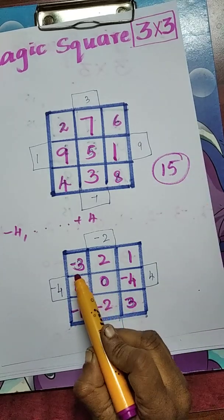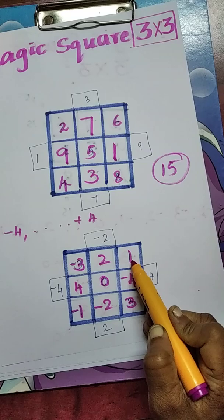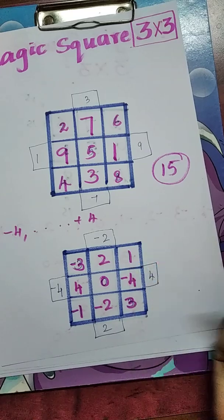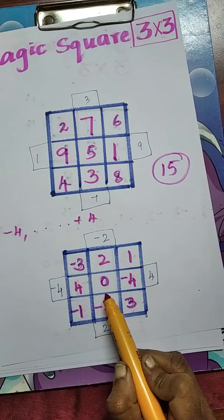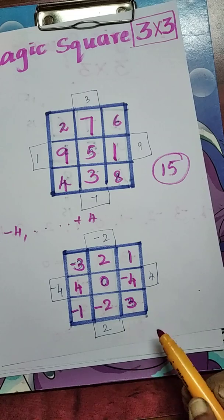Second example. Minus 3 plus 2 plus 1, that is 0. Minus 3 plus 0 plus 3, result is 0.